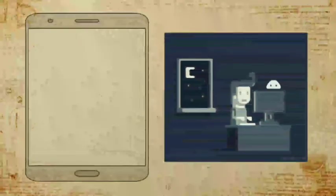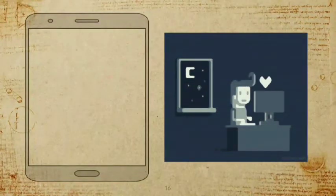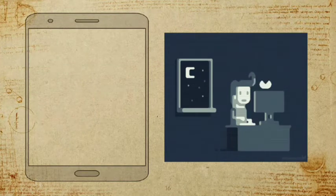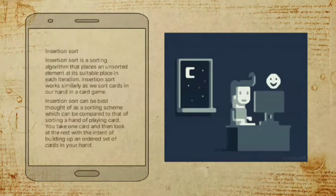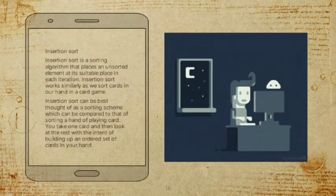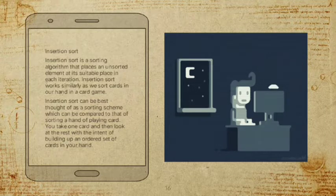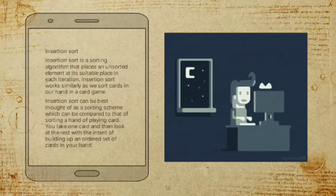Now that we are done with the first sorting technique, we will proceed to the second one — insertion sort. Insertion sort is a sorting algorithm that places each unsorted element at its suitable position in each iteration.